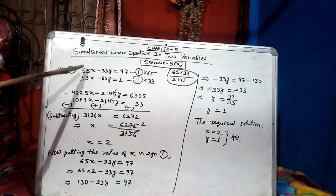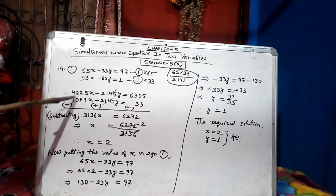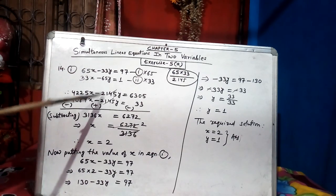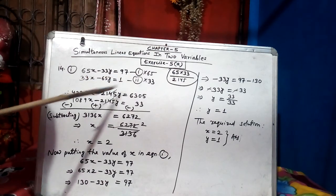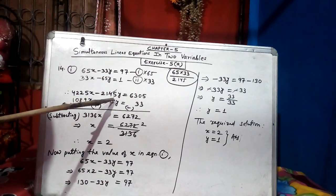Now, after multiplication 65 into 65x, 4,225x minus 33 into 65, 2,145y.